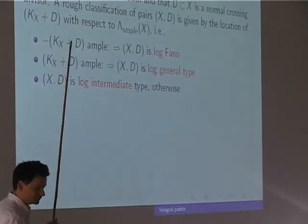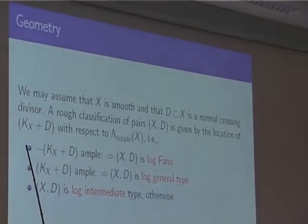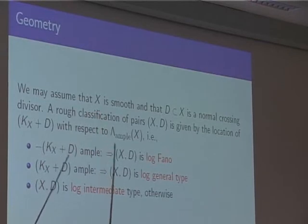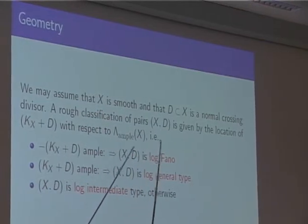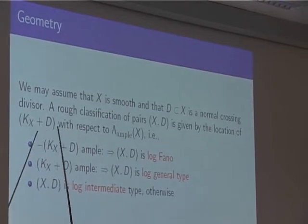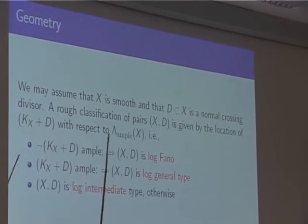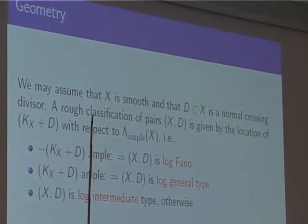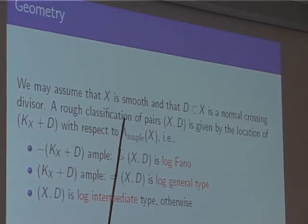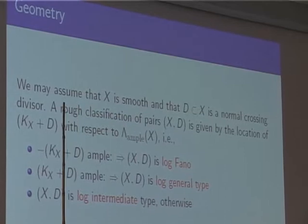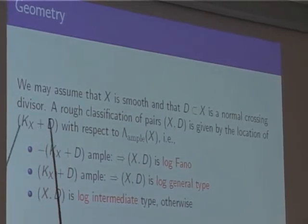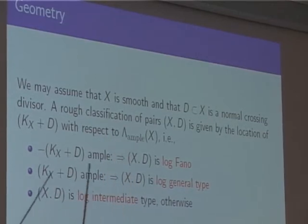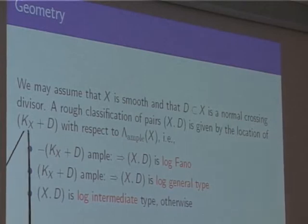A little geometric background: we may assume X is smooth, passing to a resolution of singularities, and D is a normal crossings divisor. In particular, if D was originally just a subvariety or even a point, blowing up replaces it by a divisor. That is what we will generally do.